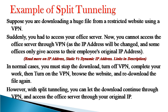Suppose you are downloading a huge file from a restricted website using a VPN. Suddenly, you had to access your office server. Now, you cannot access the office server through VPN, as the IP address will be changed, and some offices only give access to their employees' original IP address. In normal cases, you must stop the download, turn off VPN, complete your work, then turn on the VPN, browse the website, and re-download the file again. However, with split tunneling, you can let the download continue through VPN and access the office server through your original IP.